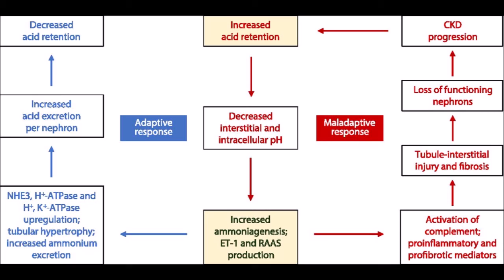Whenever a person has acidosis, the higher the ratio of alkaline-forming foods in his diet, the quicker will be the recovery. Acids are neutralized by alkalis. It is therefore imperative that persons suffering from various ailments are given adequate alkaline-ash foods to offset the effects of acid-forming foods and leave a safe margin of alkalinity.